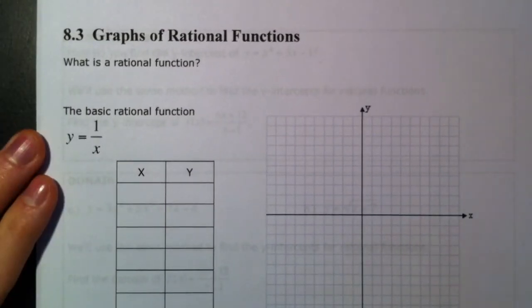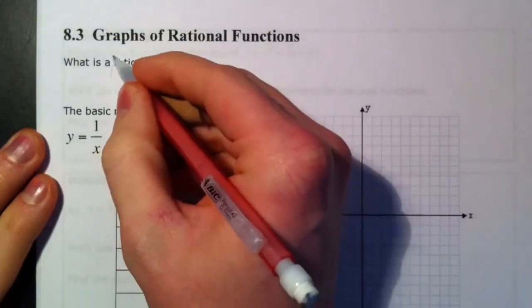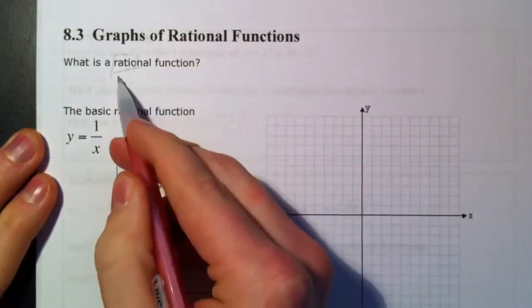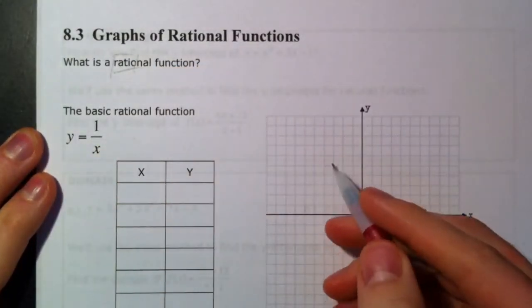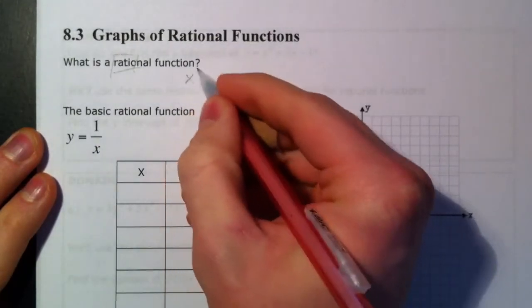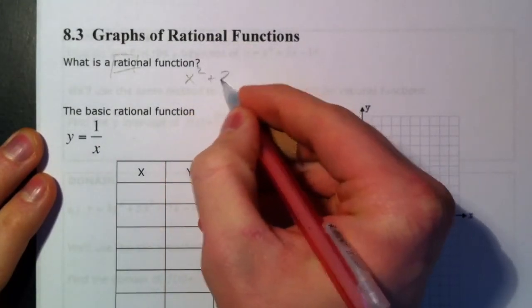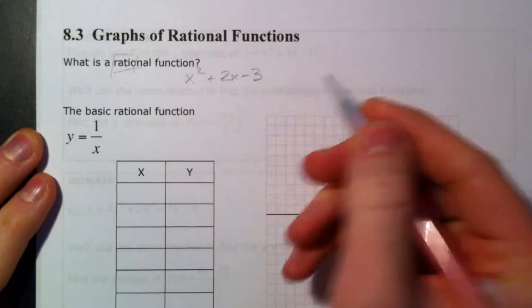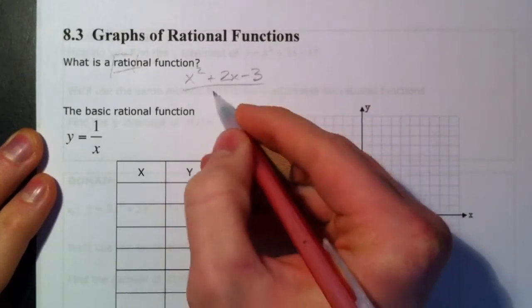And so first off, before we start graphing them, we need to know what a rational function is. And I like to think of the key word there being ratio. And so really, here's an example of one first: x squared plus 2x minus 3, some polynomial over another polynomial.